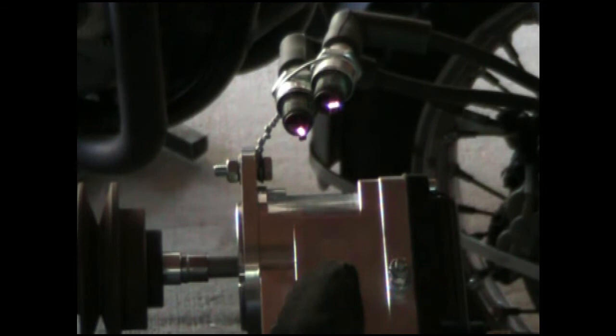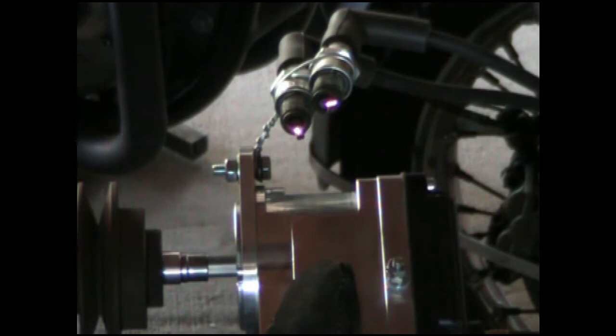All right, this magneto's spinning about 3,400 RPM, which would be 6,800 RPM on the motor.